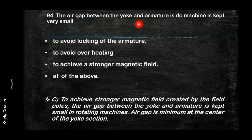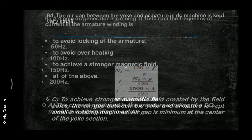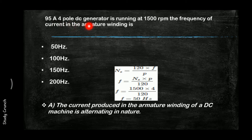The air gap between the yoke and the armature in a DC machine is kept very small. The answer is that it is to achieve a stronger magnetic field. The magnetic field is created by the field poles, and the gap between the yoke and armature is kept small in rotating machines.